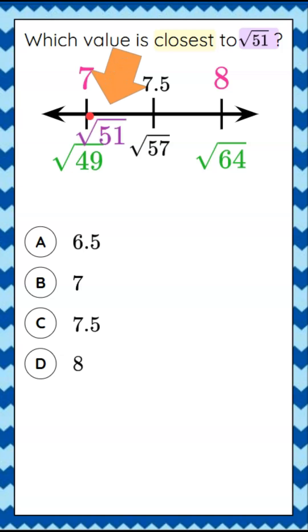Going from square root of 49, square root of 50, square root of 51, I have to go all the way to the square root of 57 to get to 7.5. So I know that the square root of 51 is closest to 7 out of these answer choices.